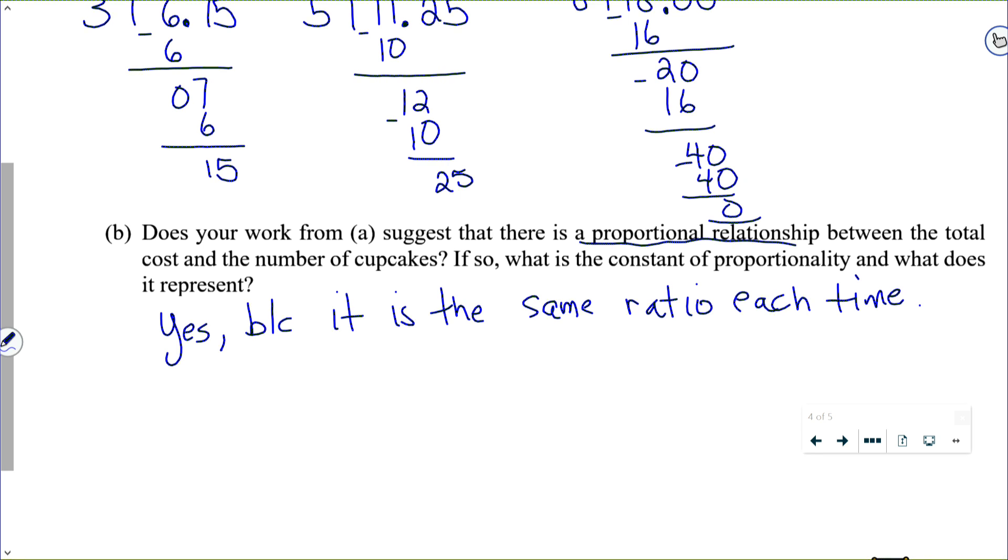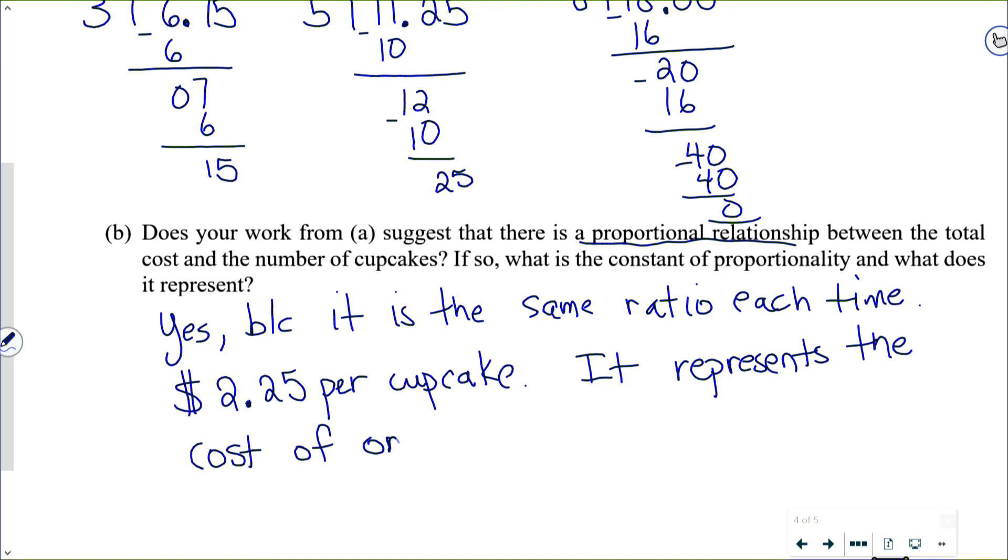If so, what is the constant of proportionality? Well, the constant of proportionality is that number, 2.25 per cupcake. And what does it represent? Well, just by writing it down, we kind of know what it represents. It represents the cost of one cupcake.